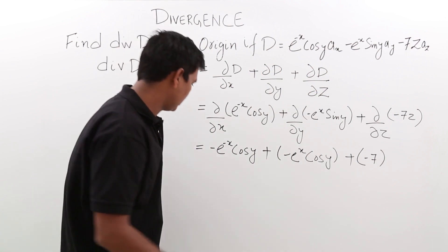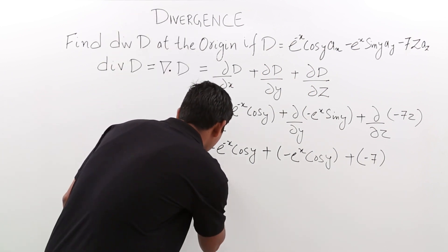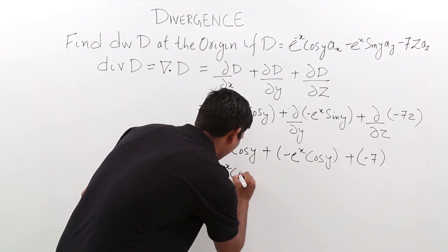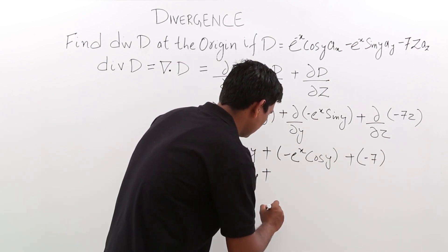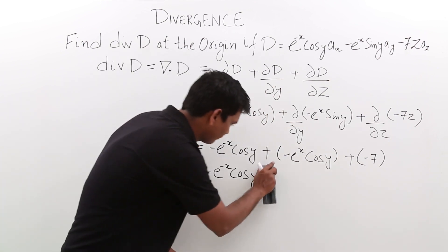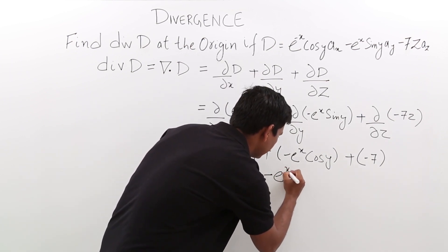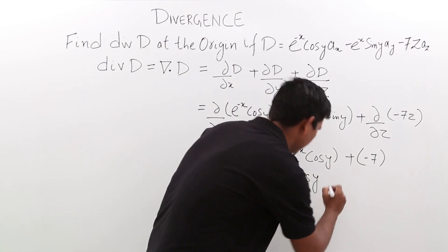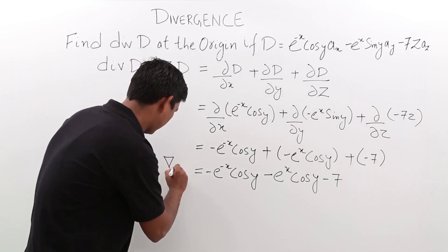Simplifying further, the expression for del dot D would be: minus e to the power minus x cos y, minus e to the power x cos y, minus 7.